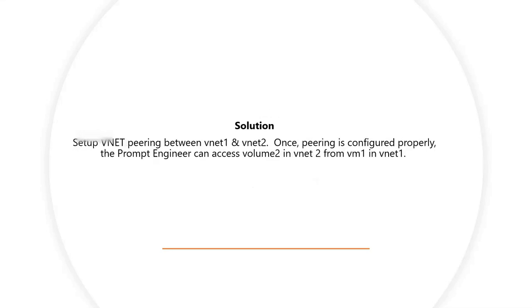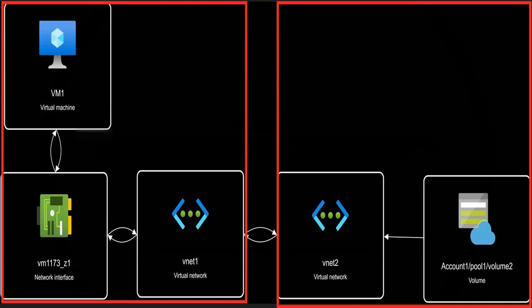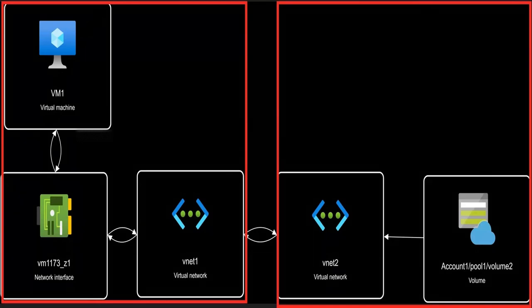The engineer consults the team lead for solutions. The team lead informs the engineer that they must set up vNet peering between vNet1 and vNet2. This is known as a vNet peering topology. vNet peering within the same region is a supported network topology for Azure NetApp Files volume creations and connectivity.